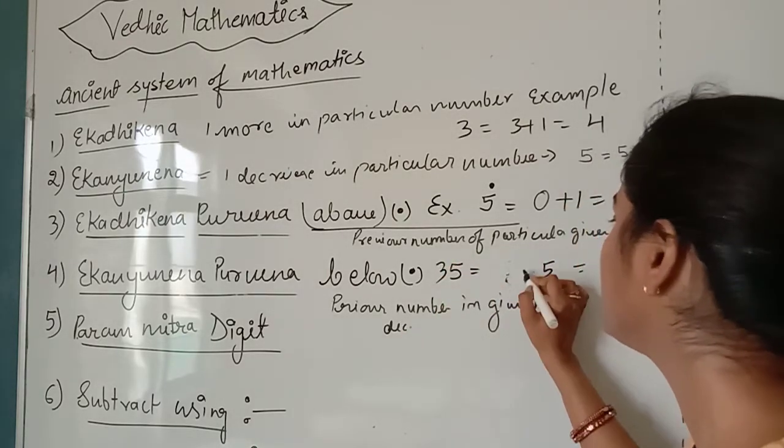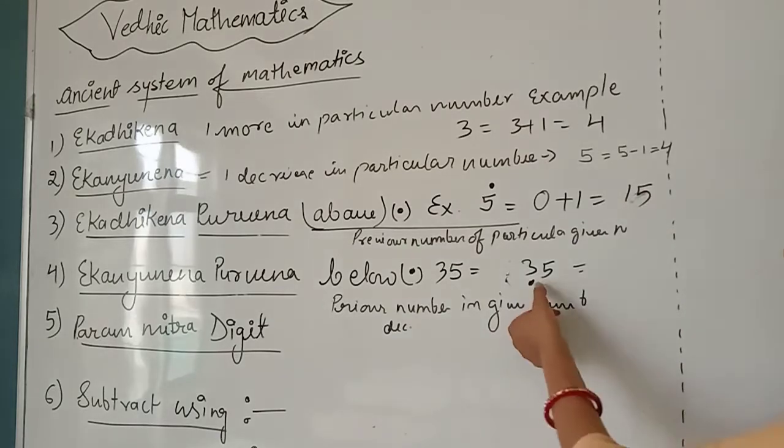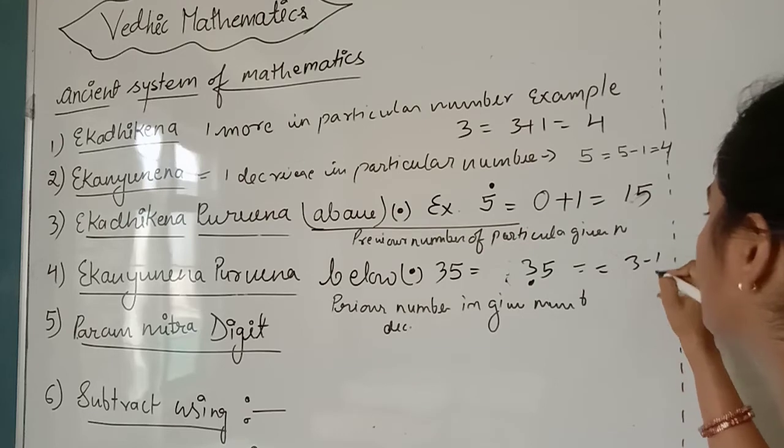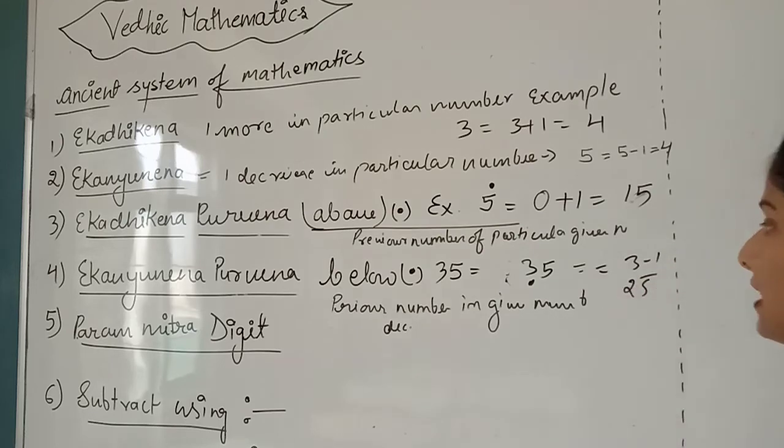suppose 35. On 35 we put a dot above 3. The dot means 3 minus 1, which gives us 25. This is the answer.